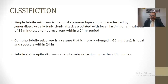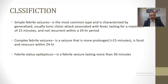The classification of febrile seizures — broadly speaking, they are divided into two main groups: simple febrile seizures and complex febrile seizures. Simple febrile seizures is the most common type, characterized by generalized seizures, usually tonic-clonic, associated with fever lasting a maximum of 15 minutes and not recurrent within a 24-hour period. So they are tonic-clonic, generalized, last less than 15 minutes, and do not recur within 24 hours.